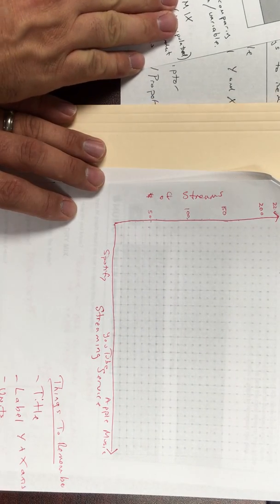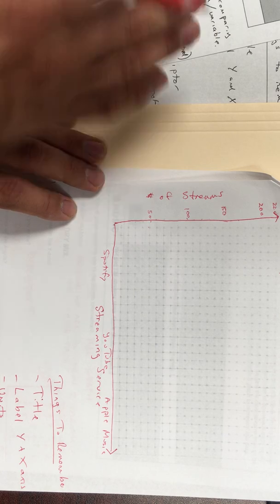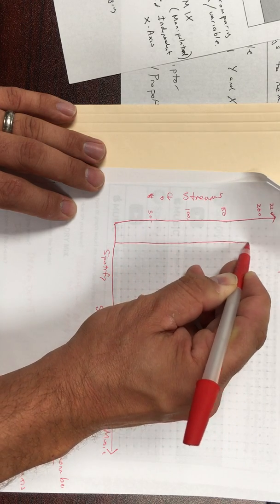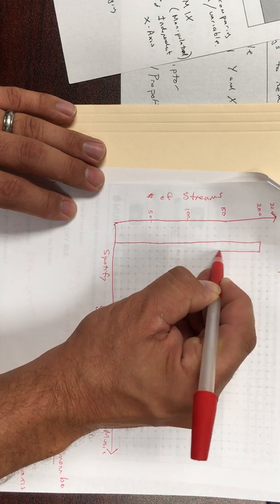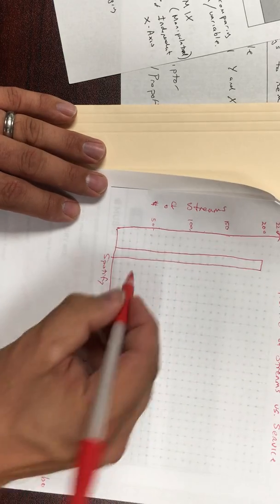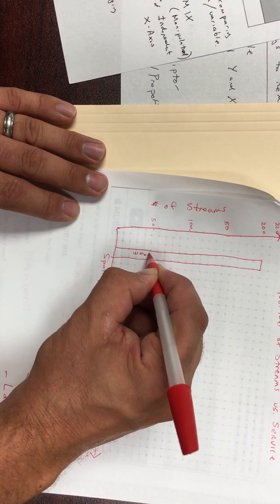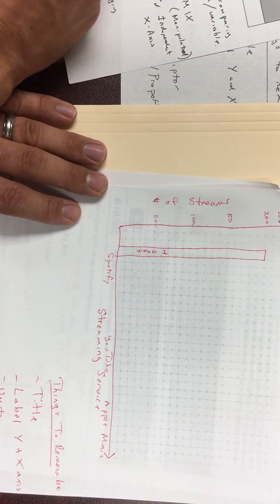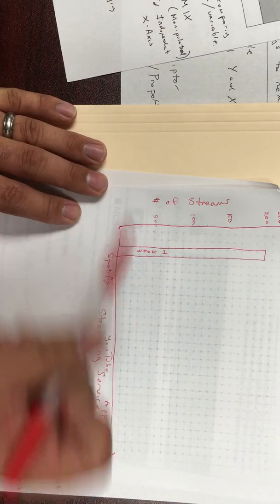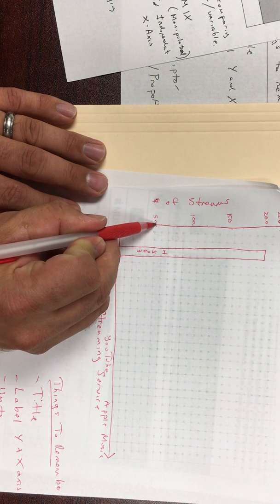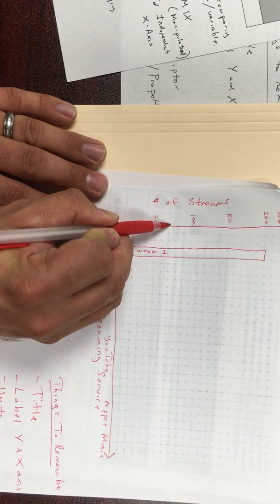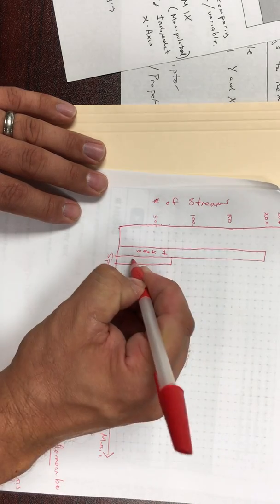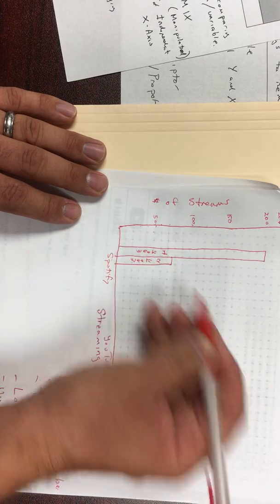Now looking at the data, Spotify the first week was 200 streams. So make a mark, go all the way up, graph 200, and I want to label that week one. Then I need to mark week two. So week two I only had 75 downloads, so that's going to be a lot smaller. So I'm going to start off with 50, 10, 20, so that's 70. And then in the middle it's going to be 75, so I'm going to go over. Week two.